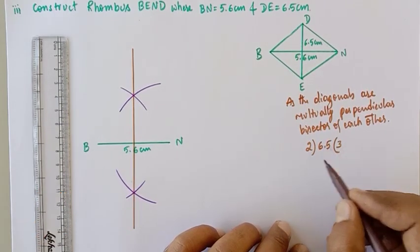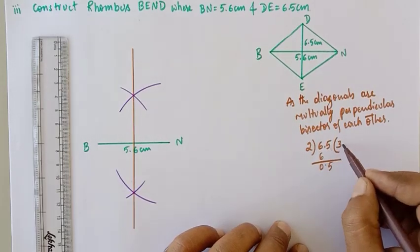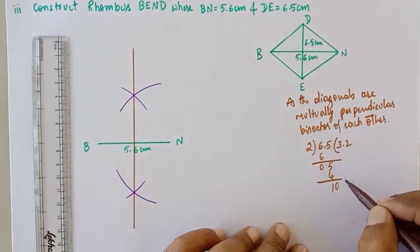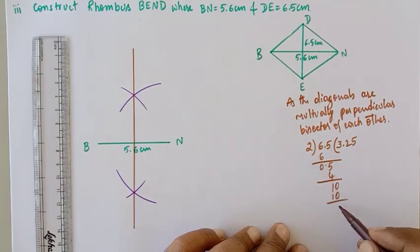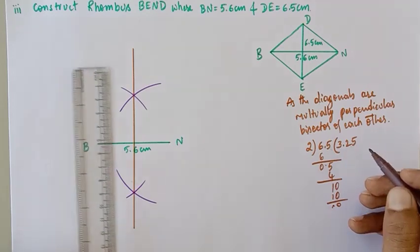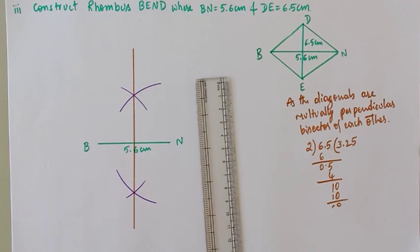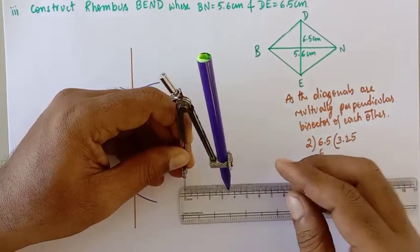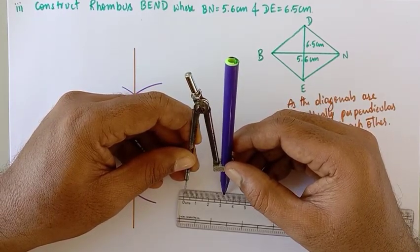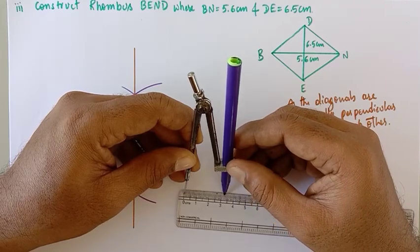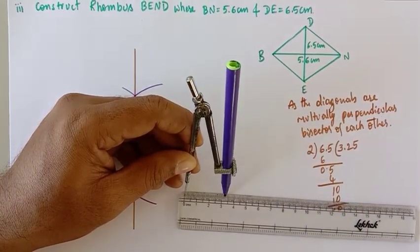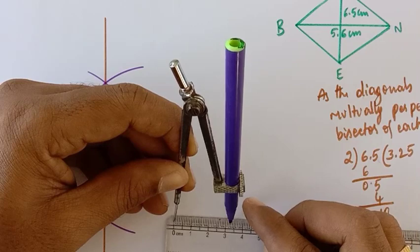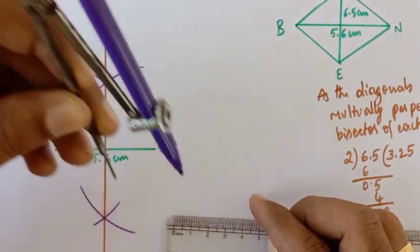6.5 divided by 2 equals 3.25. So the measurement I should take from the center is 3.25 cm. To take 3.25 cm on the compass, you need to be a bit careful — find 3.2 on the ruler and then go slightly further to 3.25. It depends on your eyesight, but 3.25 cm is the required measurement.